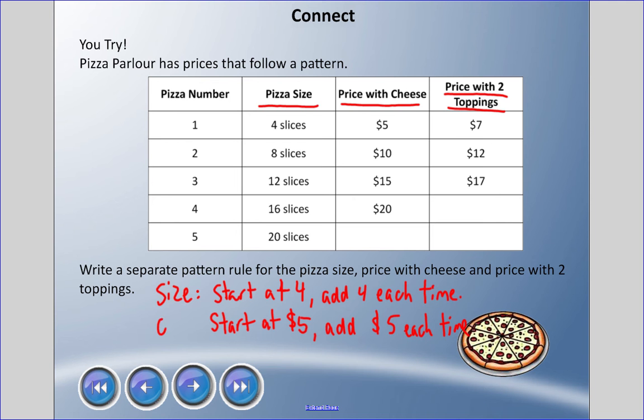And the two toppings: start at seven dollars, add - well we didn't fill this in but you can see that's starting to go up five dollars each time as well. So I really should fill this in - that should be twenty-five dollars here, that would be twenty-two, that would be twenty-seven.